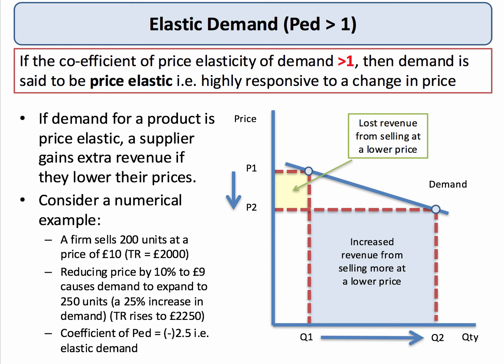9 times 250 is £2,250. So cutting the price has increased their total revenue. It's been a 25% increase in demand following a 10% fall in price, which gives a coefficient of price elasticity of 2.5 — which is elastic.